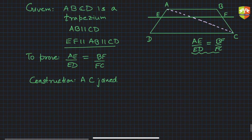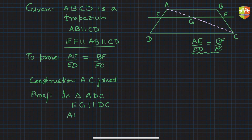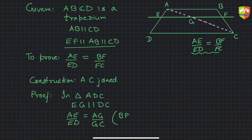In triangle CAD, let's call the intersection point G. Clearly EG is a part of EF, so EG is parallel to the base DC in that triangle. Therefore, by the Basic Proportionality Theorem — a line parallel to the base divides the other two sides proportionally — we get AE upon ED is equal to AG upon GC. This is equation one.